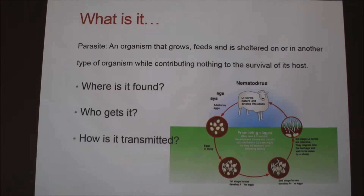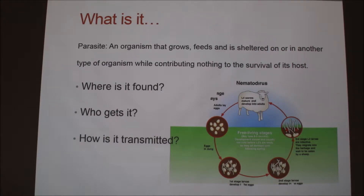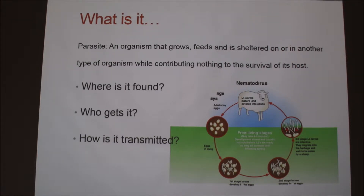There are two different types of parasites: an internal parasite and an external parasite. Nematodirus is an internal parasite. The more scientific name for an internal parasite is endoparasite, and the name for an external parasite is ectoparasite — ECTO parasite versus endoparasite.